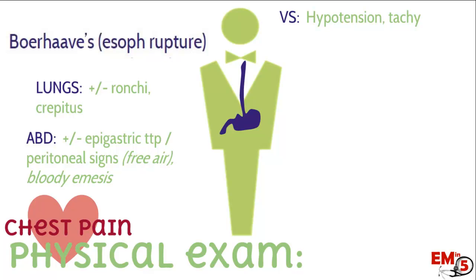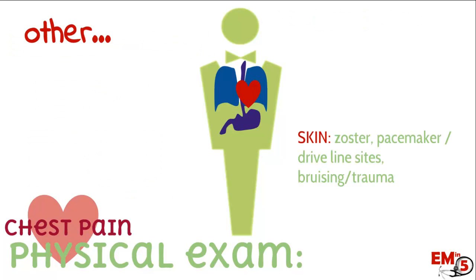For Boerhaave's, look for peritoneal signs indicating free air in the abdomen. You might feel crepitus on the chest wall from pneumomediastinum, or hear Hamman's crunch, and you might also hear some rhonchi. Always look at the skin exam for signs of zoster that could be causing chest pain. If the patient has a pacemaker or LVAD, check those sites for any signs of infection.